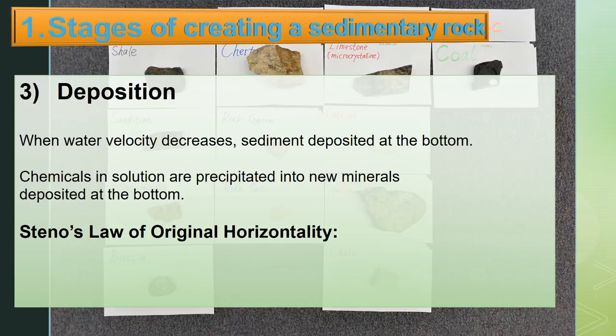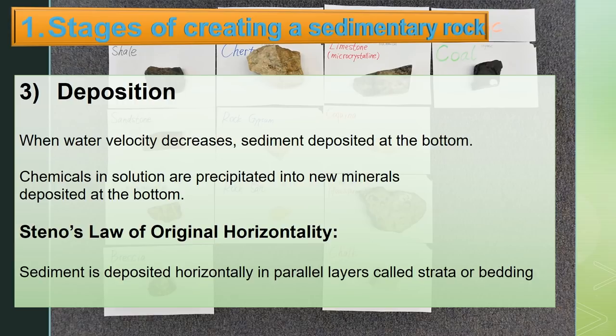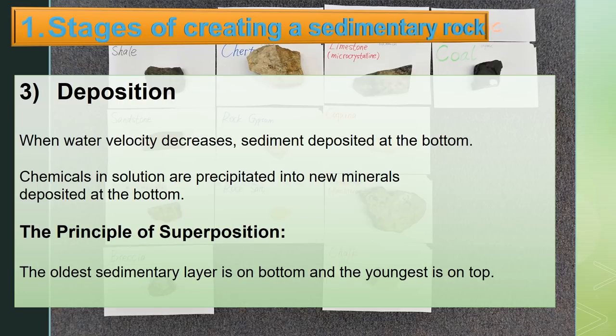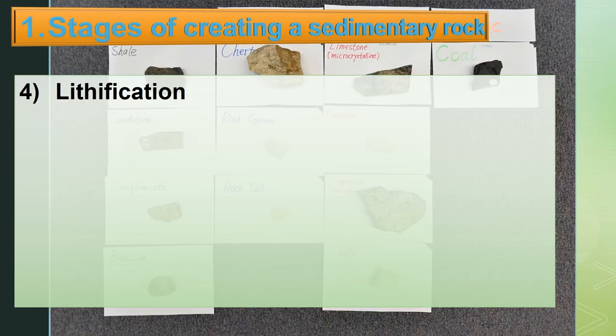Steno's law of original horizontality states that sediment is deposited horizontally in parallel layers called strata or bedding. The principle of superposition states that the oldest sedimentary layer is on the bottom and the youngest is on top.